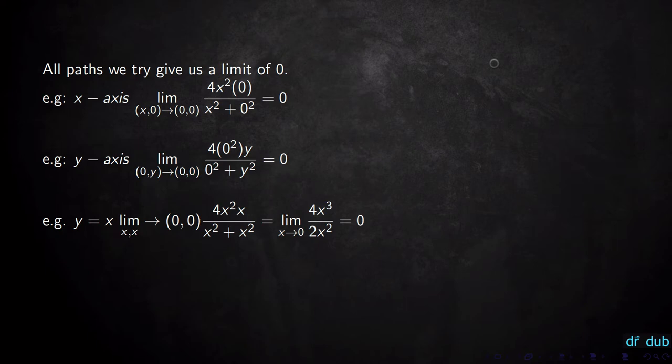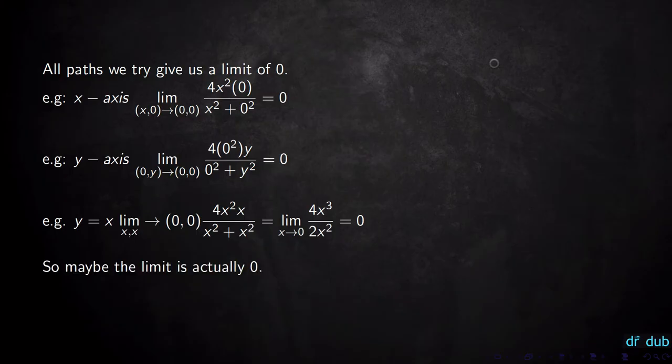Trying another path to the origin, the line y equals x — all of these paths go to the origin. As x goes to zero, this reduces down to 4x over 2, which is just zero again. So this is suggesting that maybe the limit is zero.